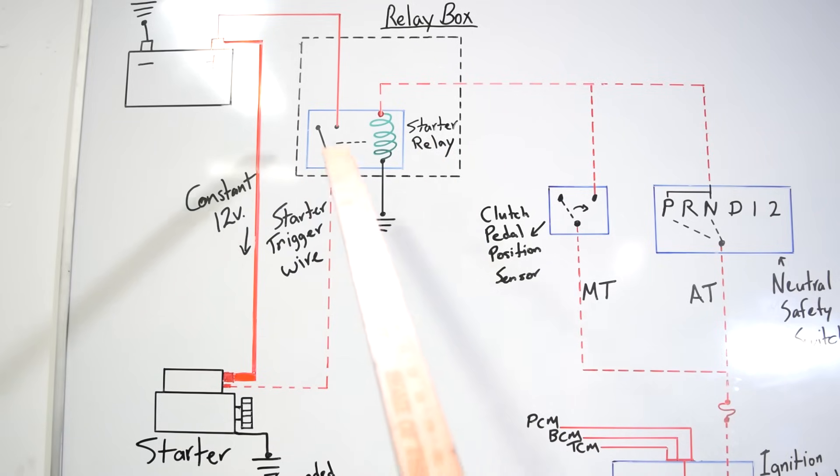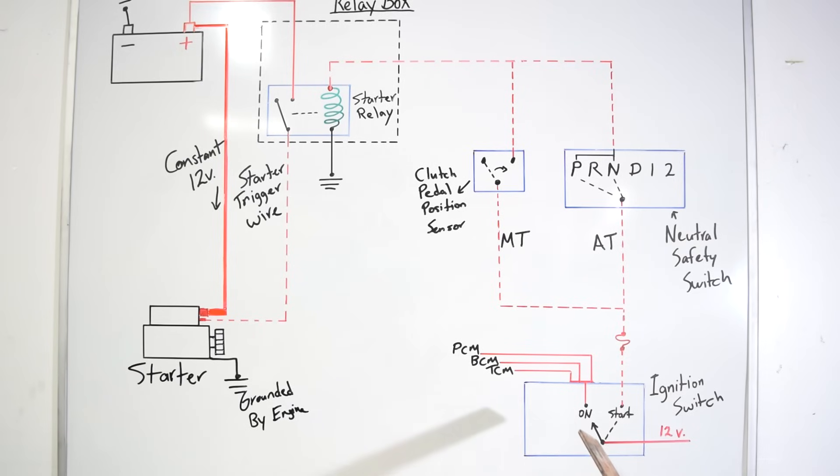This is going to be the power wire to your starter relay for the control side. And the ground side is grounded through your chassis usually. So once again when you put your key to the on position and then start, you're powering all your control modules and then you're sending voltage through this wire through your clutch pedal position sensor or your neutral safety switch to the control side of your starter relay and activating this relay.